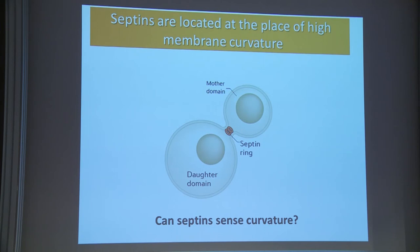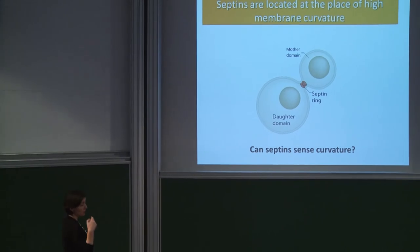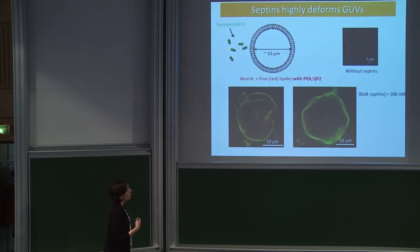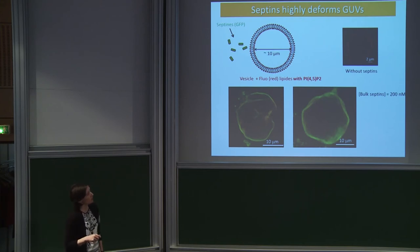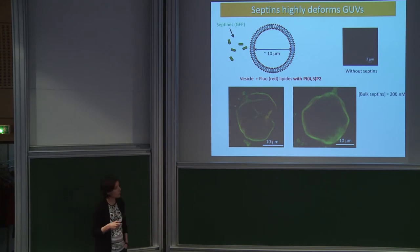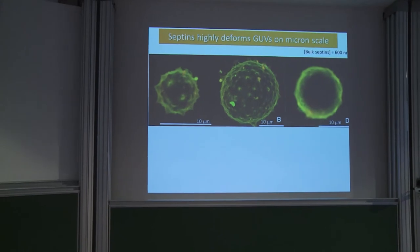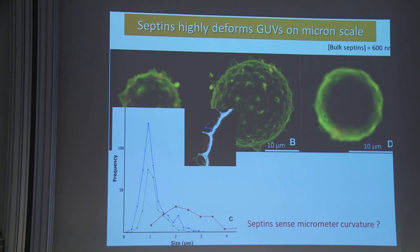I remind you that septins are located between the mother and daughter cell at the constriction site, which is highly curved. So we want to see if septins are able to sense this membrane curvature. At higher septin concentration, we can see that the vesicles are not round anymore — they are sort of bumpy and completely static. If we increase again the septin concentration to 600 nanomolar, we see spiky vesicles with a distance between spikes that seems repetitive, ranging from one to three to four microns, probably depending on vesicle size.